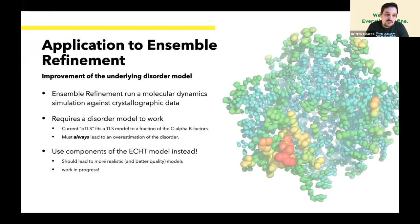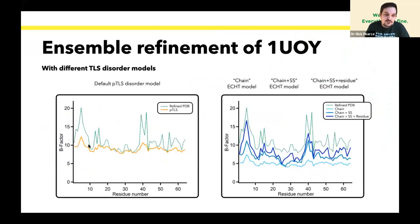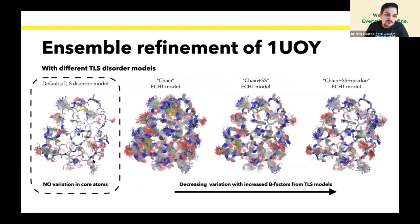So very quickly, we've also applied this to ensemble refinement. Ensemble refinement runs molecular dynamics simulation against crystallographic data. Unfortunately, to get it to work, you need a disorder component because it's crystallography. The current approach isn't great because it fits to the C alphas of the model and you end up with a disorder component that's too large. The Echt model allows us to choose how much disorder we want to put into the disorder and how much we want to be reflected in the MD simulation. This enables us to tune the simulations and prevent what is an artifact where you end up with atoms that do not move in an MD simulation, which is very strange.